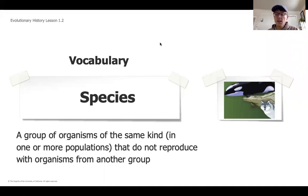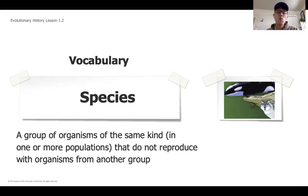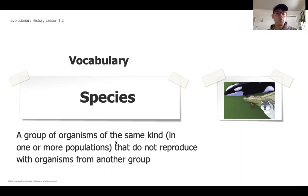We ended the last video by saying that our role as paleontologists is going to be to figure out where exactly our new fossil belongs in the museum. One of the ways that scientists use to categorize organisms is they can organize them by different species. A species is a group of organisms of the same kind in one or more populations that do not reproduce with organisms from another group.